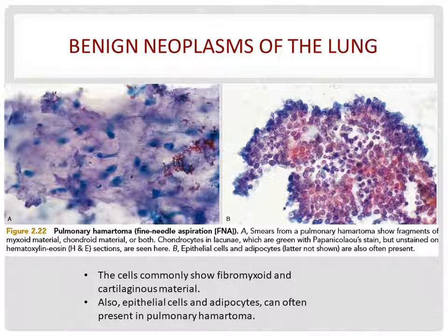Now we move to the cytology characteristics in benign neoplasms of the lungs. First, pulmonary hamartoma. Cells in pulmonary hamartoma commonly show fibromyxoid and cartilaginous material. Also, epithelial cells and adipocytes can often be present in pulmonary hamartoma.